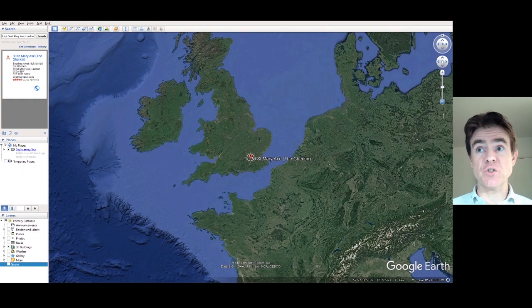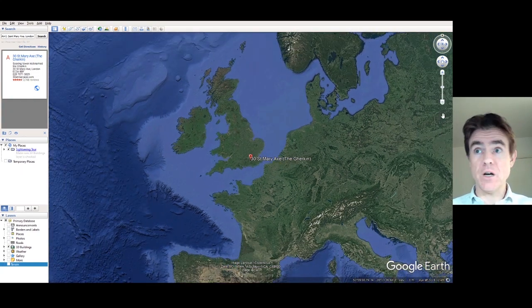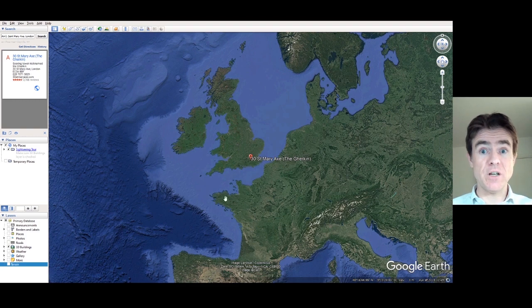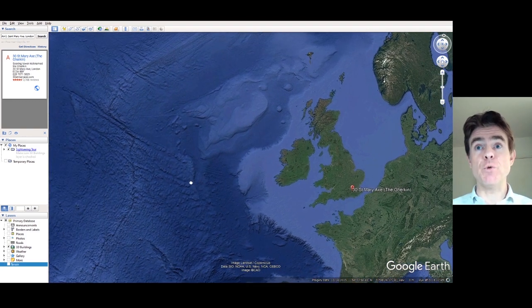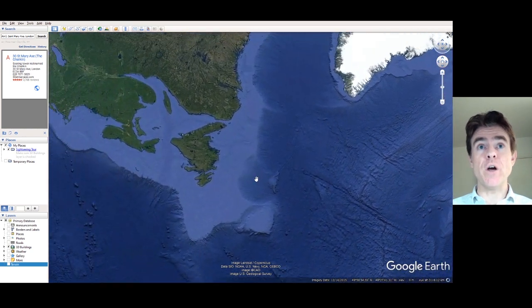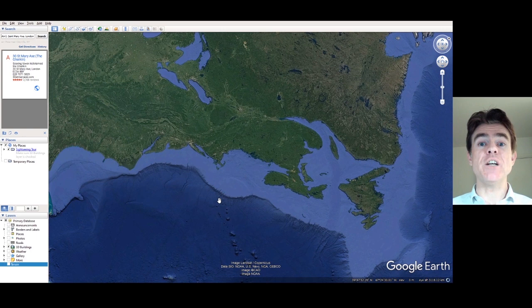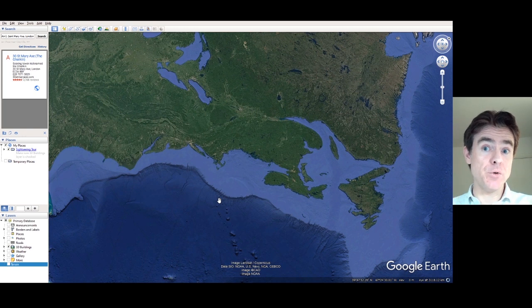We still would not expect to find the electron, even at this distance, as we start to approach France there. In fact, we wouldn't even expect to find the electron within the vicinity of Europe, using the Gherkin building in London as a representation of the nucleus. What we have to do is go all the way out towards the USA, the east coast of the USA, and that is roughly where we'd expect to find the electron if we were to use that Gherkin building in London as a representation of the size of the nucleus.